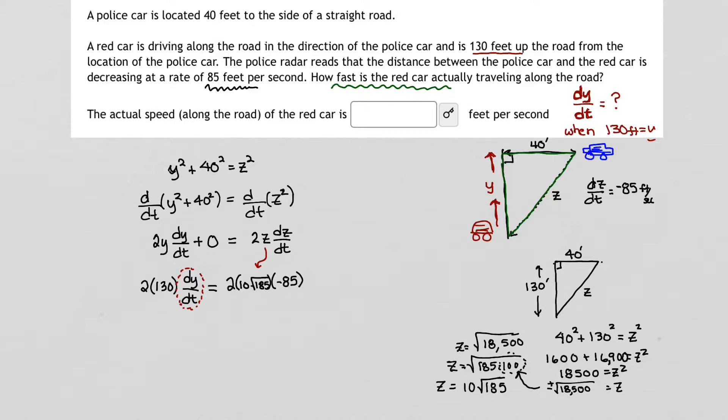I'm now ready to solve for dy/dt. So this means that dy/dt is equal to 2 times the quantity of 10 square root of 185 times negative 85 divided by 2 times 130. I'm going to do a little quick calculation here. I know that 2 can cancel with 2. I also know that 10 can go into 130. I don't think there's any other simple cancellations that I can see. So that means that dy/dt is negative 85 times the square root of 185 divided by 13.